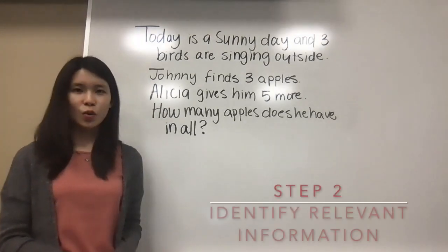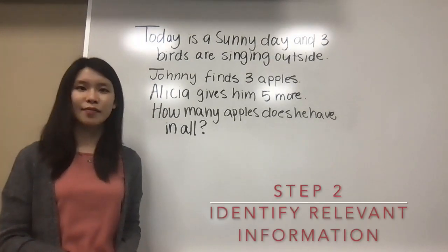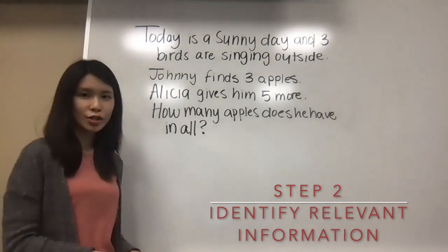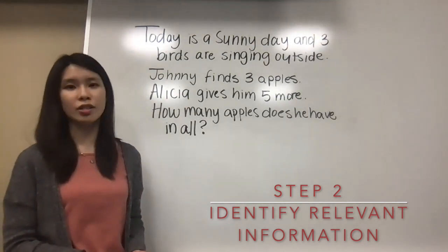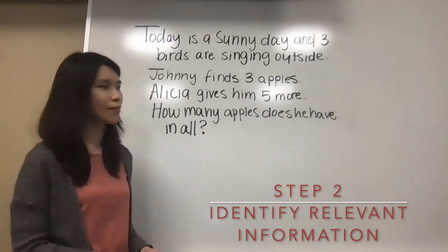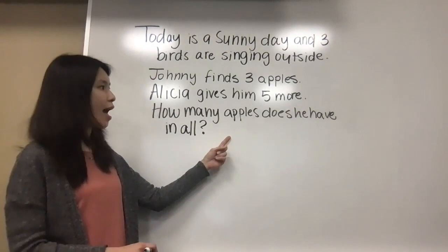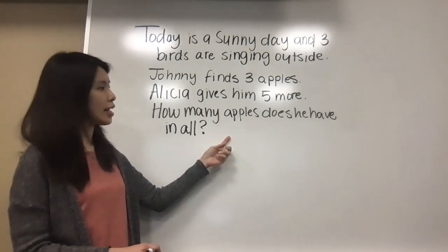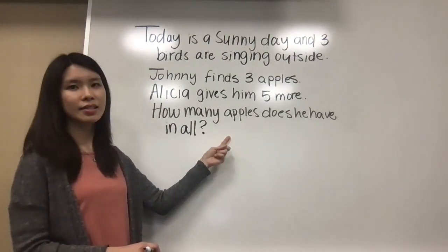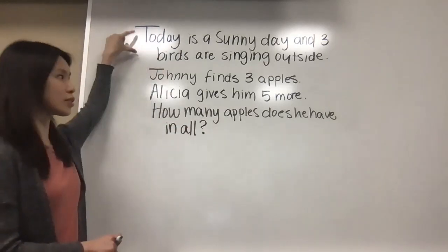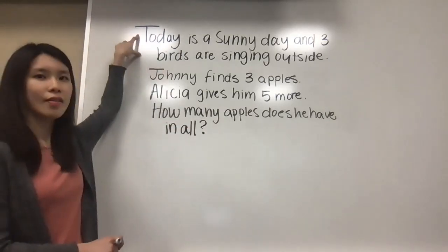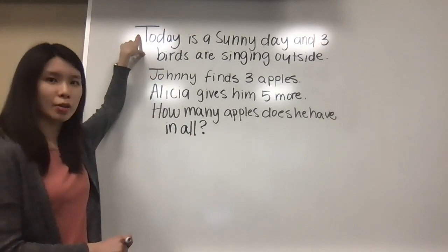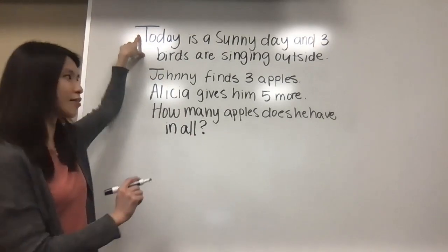The second step is to identify relevant information. First, we want to look at what this question is asking — it's asking how many apples does Johnny have. So the first two sentences that talk about the weather and the birds are irrelevant. Let's cross them out.